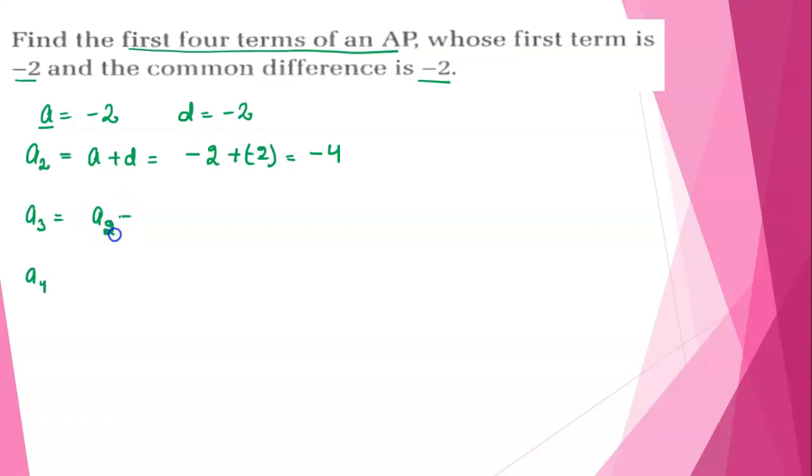Next A3 is A2 plus common difference equals A2 is minus 4 plus D is minus 2. So here minus 4 minus 2 is minus 6.